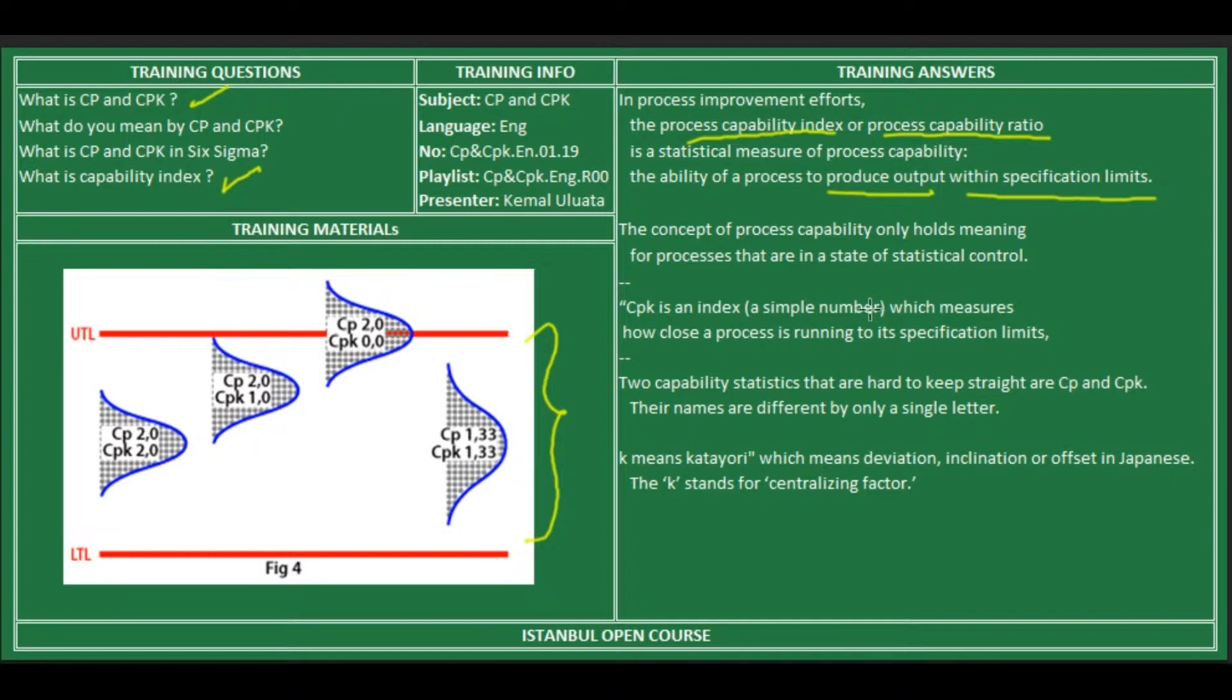The concept of process capability only holds meaning for processes that are in a state of statistical process control.